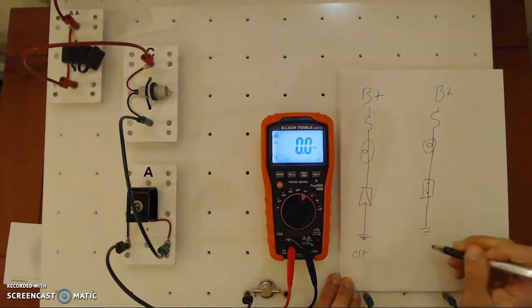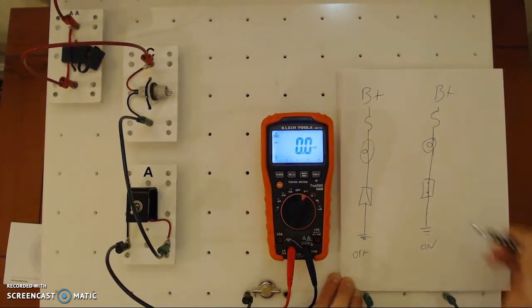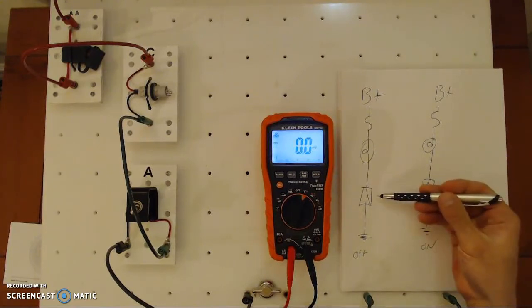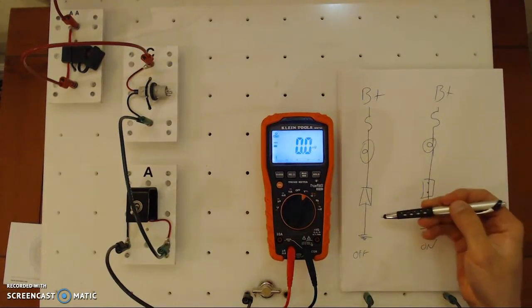So here is off. Here is on. We got a series circuit, single load. This one's a switch to ground. In the previous video, we talked about load to ground. So things are a little bit different.